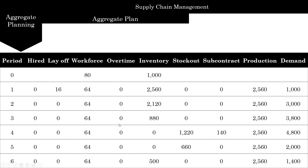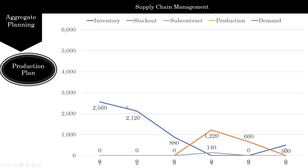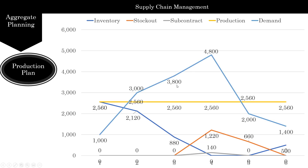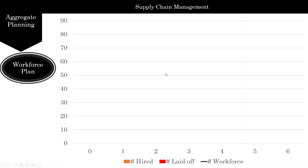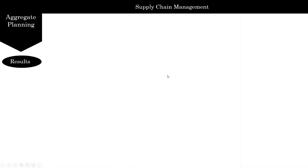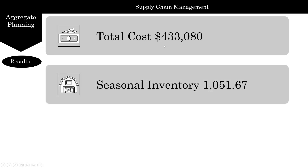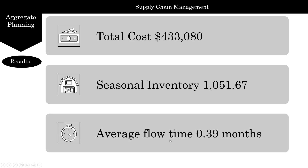Let's look at the solution. We've got the solution here and let's start looking at the production plan visually. Inventory goes down, stock out kind of goes up, production is flat, and demand shoots up and then goes down. Here is your workforce plan. And now let's look at the final results: total cost is 433,000, average inventory is 1,051 units on average, and flow time is about 0.39 months for units to go through your inventory.